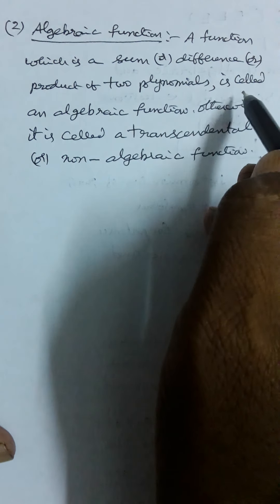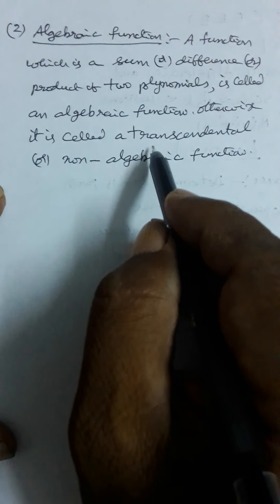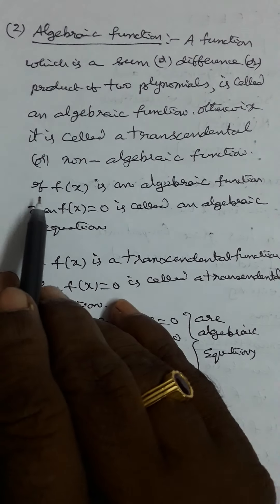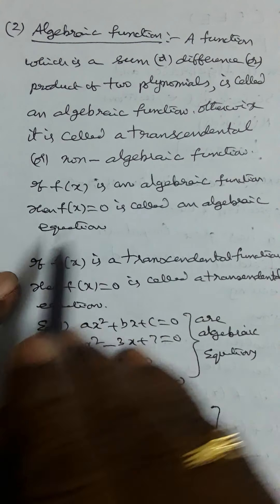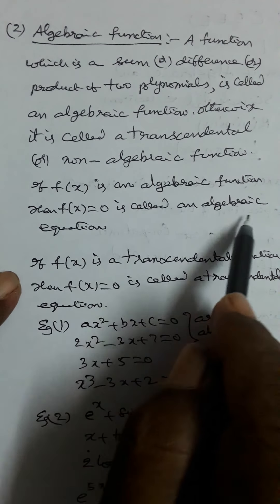Second definition: An algebraic function is a function which is a sum, difference, or product of two polynomials. Otherwise, it is called a transcendental or non-algebraic function. If f(x) is an algebraic function, then f(x) = 0 is called an algebraic equation. If f(x) is a transcendental function, then f(x) = 0 is called a transcendental equation.